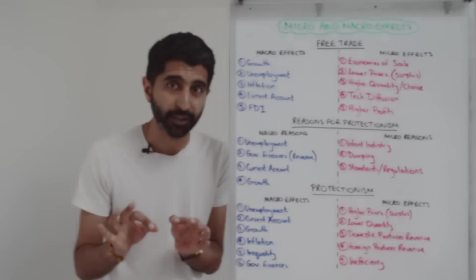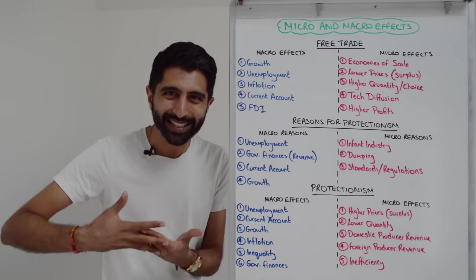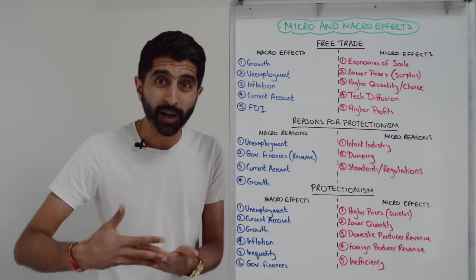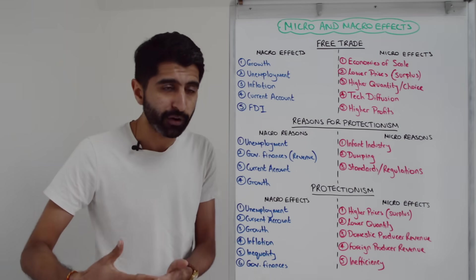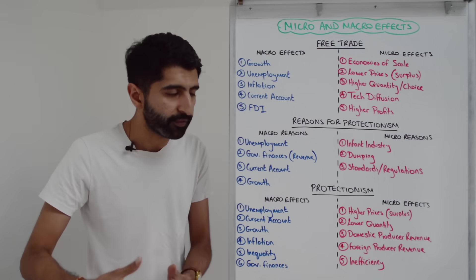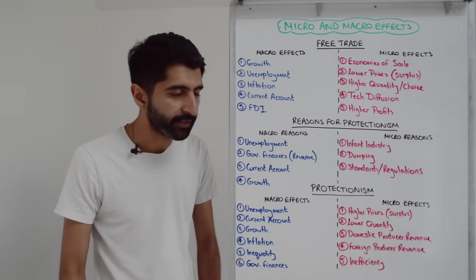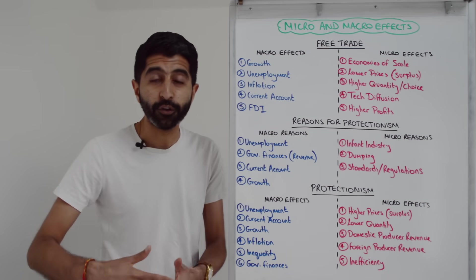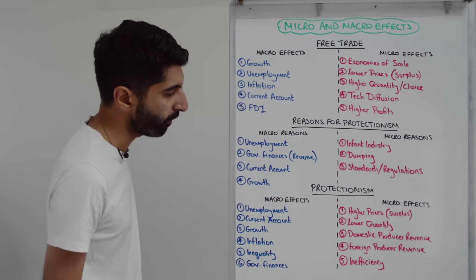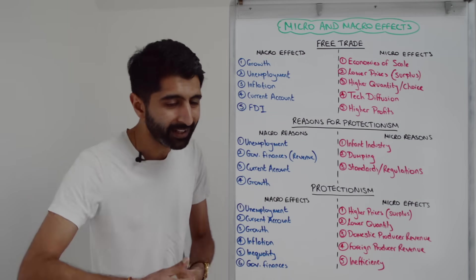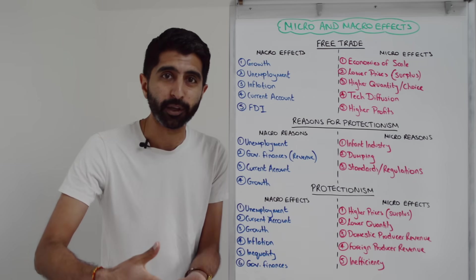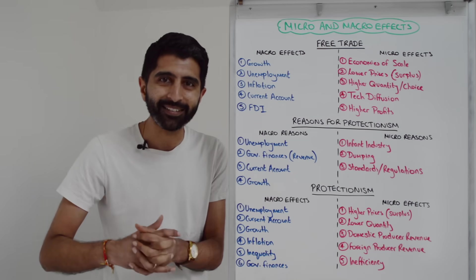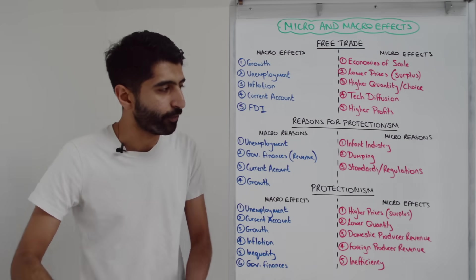Let's move on to reasons for protectionism. Macro reasons are very clear. To protect against unemployment is very much a macro reason. To raise revenue for developing countries is quite a big deal — a major source of tax revenue is actually tariff revenue, specifically coming from tariffs if they're imposed. We can link that overall to the state of government finances and them improving. Even for developed countries, if tariffs are placed on a wide variety of goods, it can be quite a substantial benefit. To reduce a current account deficit is quite a common reason. We can even link to economic growth as a macro reason too: by squeezing imports, ceteris paribus, as long as X stays the same, X minus M can increase and that takes you to higher economic growth.